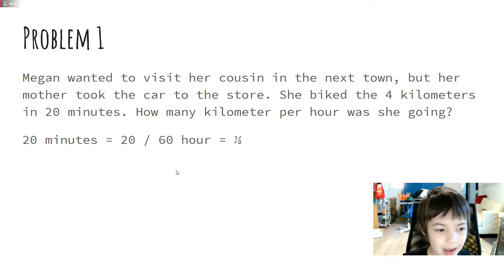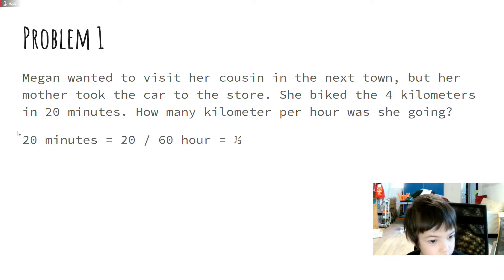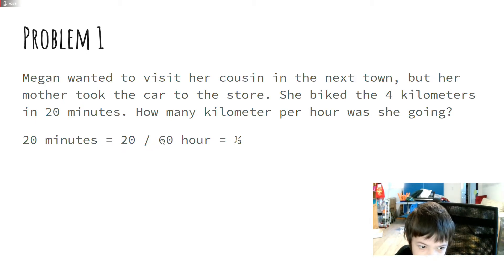So I want to find how many kilometers per hour. 20 minutes equals 20 divided by 60, because 60 minutes equals an hour, and that equals 1 over 3, because 20 is the fraction 1 over 3.